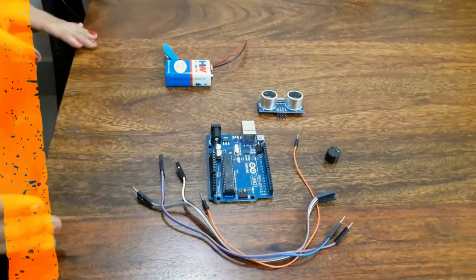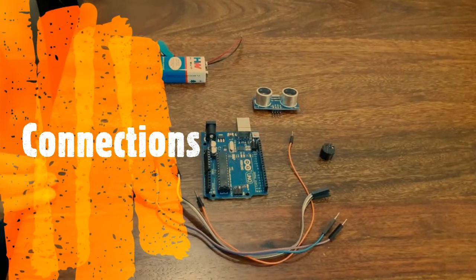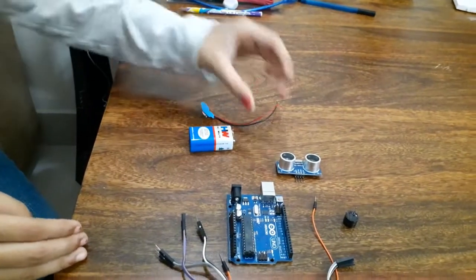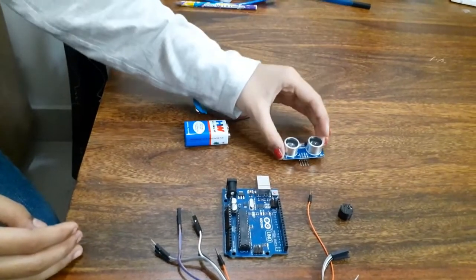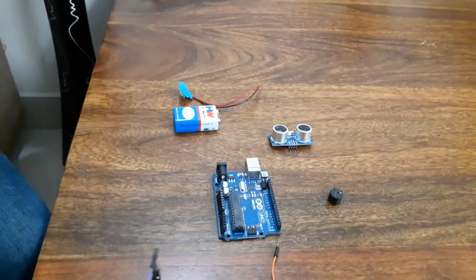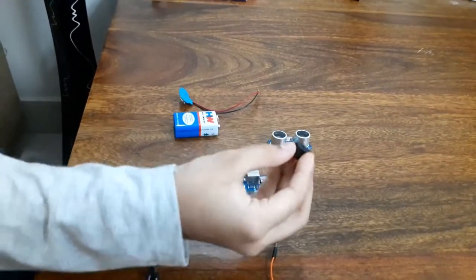Now let us move on to the connections. The materials required are 9V DC battery, a sensor, Arduino Uno R3 board, connecting cables and piezo buzzer.